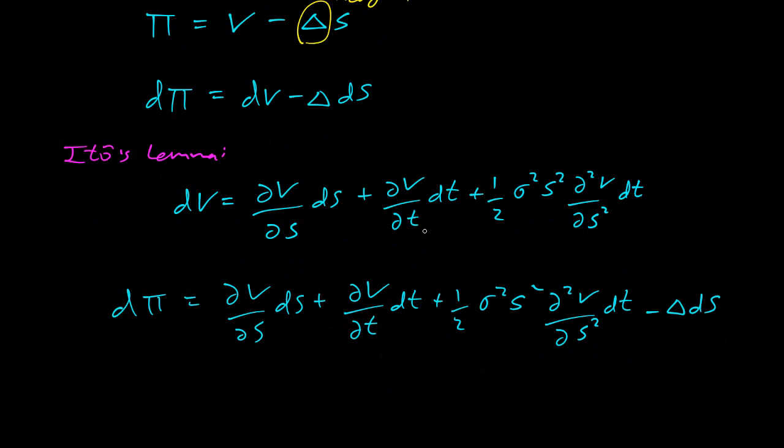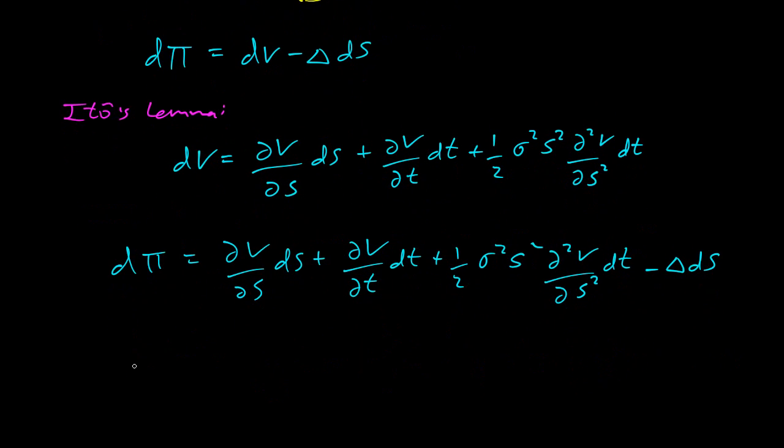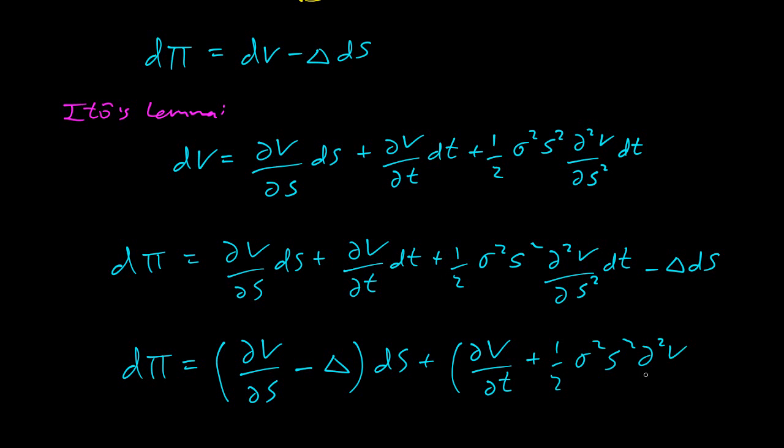So let's collect up the dS. Let's collect up terms now. This equation is getting a bit messy. So let's collect up the dS terms first. We get (∂V/∂S - Δ) dS. And now let's collect up the dt's. So we get ∂V/∂t plus half σ² S² ∂²V/∂S² dt.